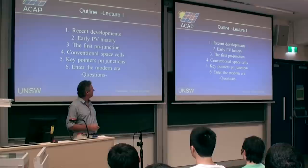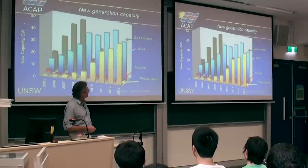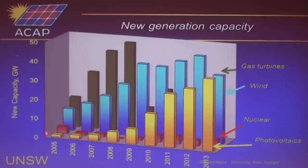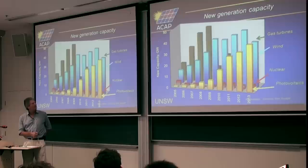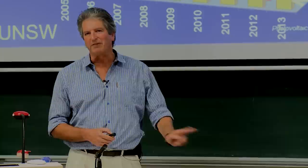This is a chart I've been preparing for many years, but each year I just update the amount of new capacity that's been added from various sources. I started in about 2005 when PV was way down. PV has surged from nowhere over the last decade or so. Wind, for long, was the largest source of new renewable electricity generation installed worldwide. But last year was a historic year in that there was more PV capacity installed worldwide than wind for the first time.